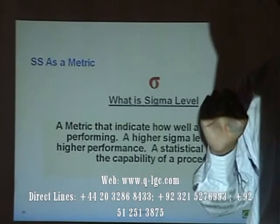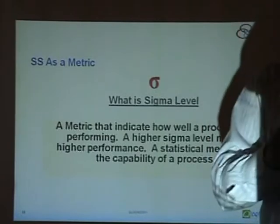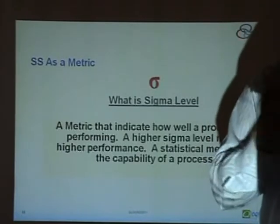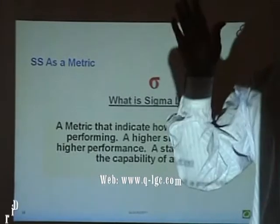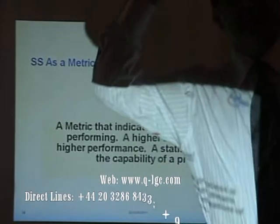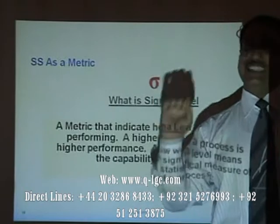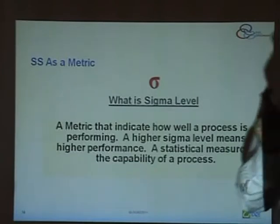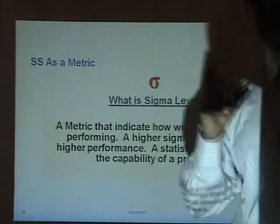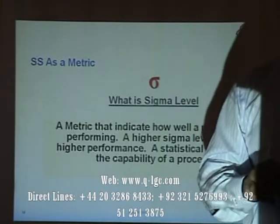There is no process in the world that you can claim has zero variation. Zero variation cannot be possible in any aspect of any process. Wherever a process is being operated — even using high-tech equipment or machines — variation will still be there. Since every process has some variation, Six Sigma focuses on minimizing the variation of processes.